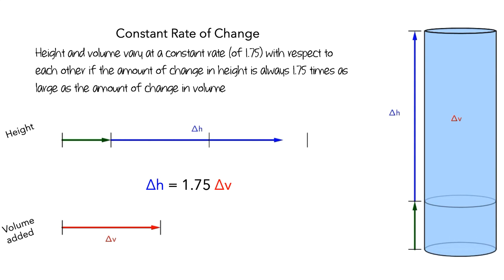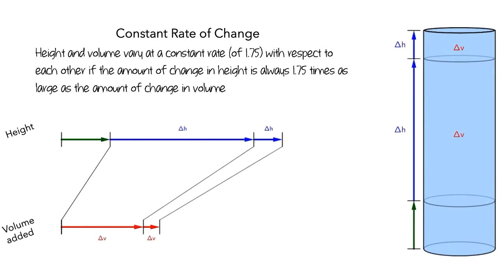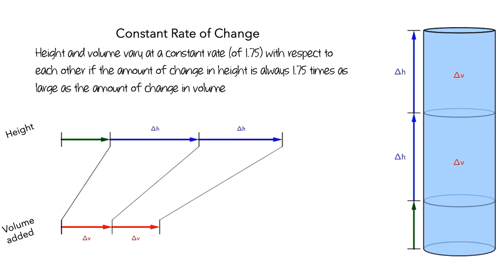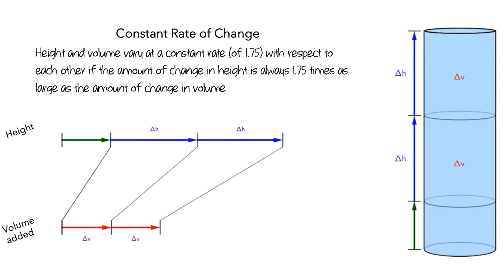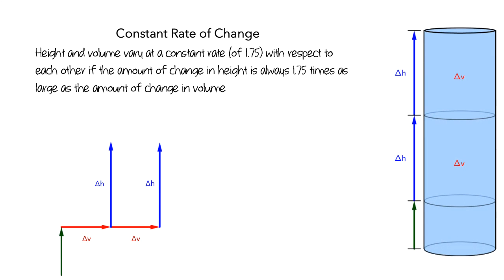We can also think about how this would work if, instead of treating the added volume of water as a single large part, we split our volume into two equal-sized parts. To make things a little easier to see, let's rotate the height bar. It's still the case that, for each of the two sections of added volume, the amount of change in height is about 1.75 times as large as the amount of change in volume.